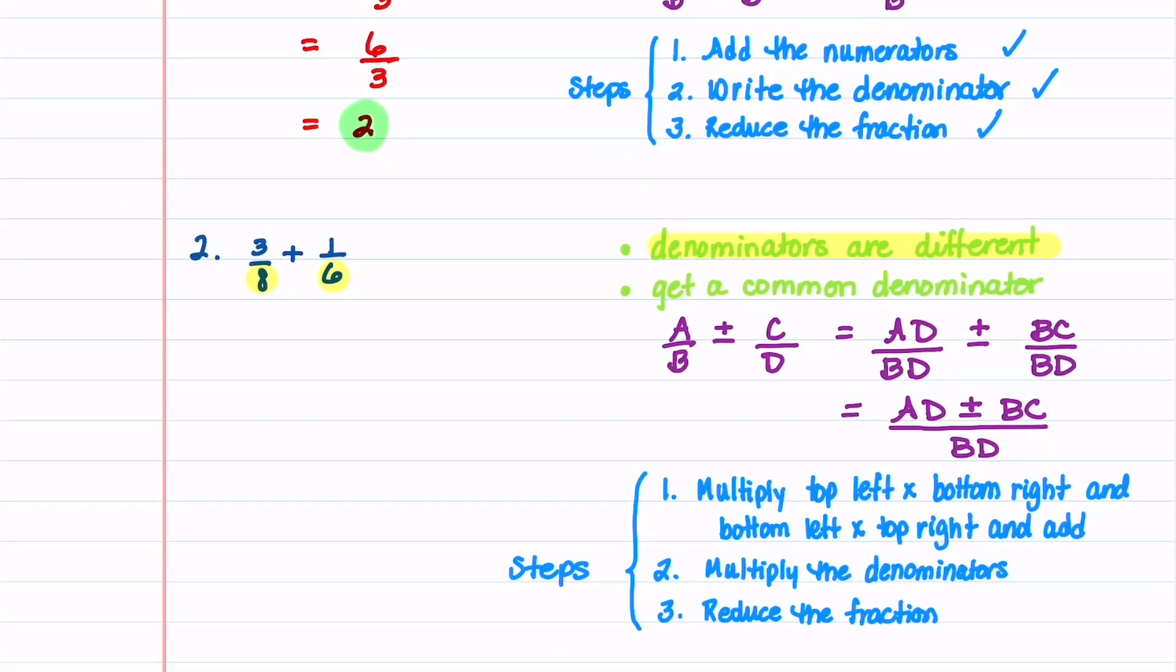Let's now do the second example. Since the denominators are different, we need to get a common denominator. Our common denominator is going to be b times d, which in our problem is 8 times 6. To get a common denominator, we'll multiply the numerator and denominator of the first fraction by the denominator of the second fraction, and then we'll do the same thing for our second fraction.